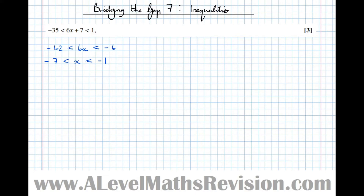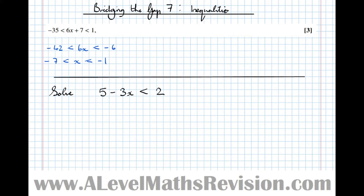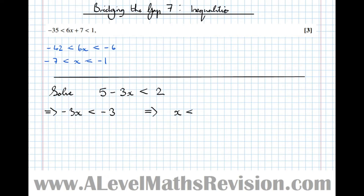Get used to seeing three-sided inequalities — that's a new thing coming from GCSE to A-level. Now let's look at another quirk. Say we're asked to solve 5 minus 3x is less than 2. I'll do this incorrectly first. Taking away 5 gives minus 3x less than minus 3, then dividing both sides by minus 3 gives x less than 1 — and that's not right.